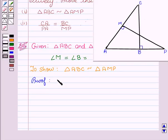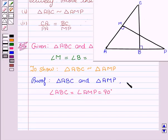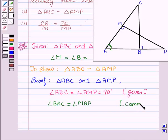In triangle ABC and triangle AMP, we have angle ABC equal to angle AMP equal to 90 degrees. We are given that angle BAC equal to angle MAP since this is a common angle. Therefore,